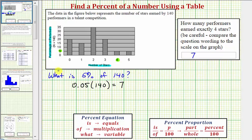Looking at our question, the first word is what, so we write down a variable—let's use x. Is means equals. We know five percent as a decimal is 0.05. Of means multiplication, and then we have 140. Notice how this product is the same product we have here, and therefore we know x equals seven, giving us the same result.